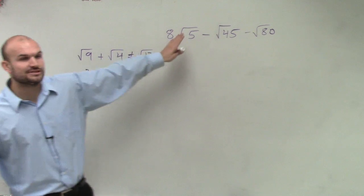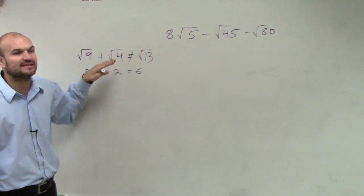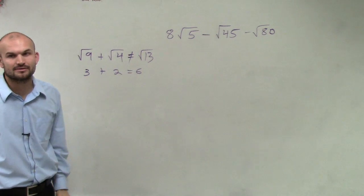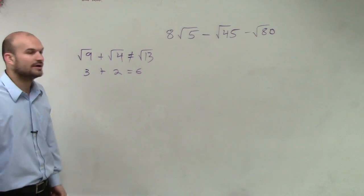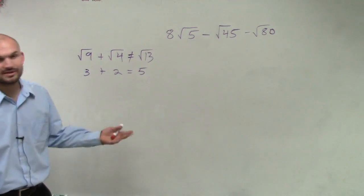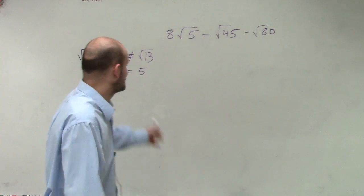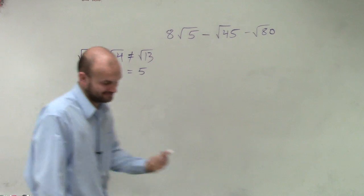So ladies and gentlemen, for me to combine like terms, I have to have them be the same exact number. Yes? 3 plus 2 does equal 5. You're right. Just waiting on you guys. So you guys can see, but obviously you can see that this does not equal square root of 13, right? Exactly.